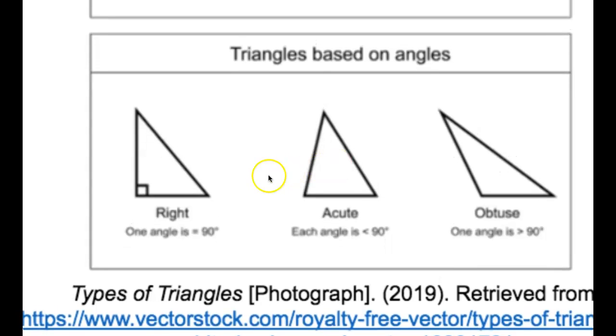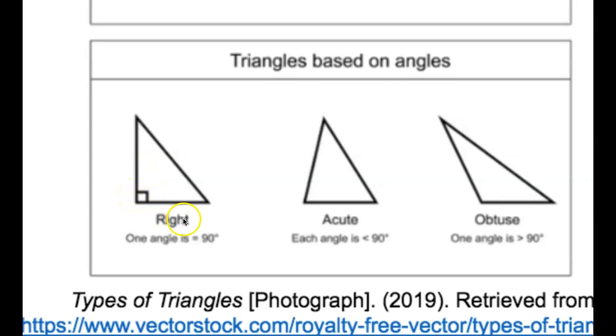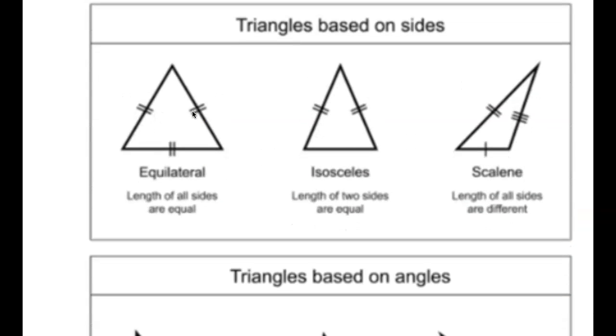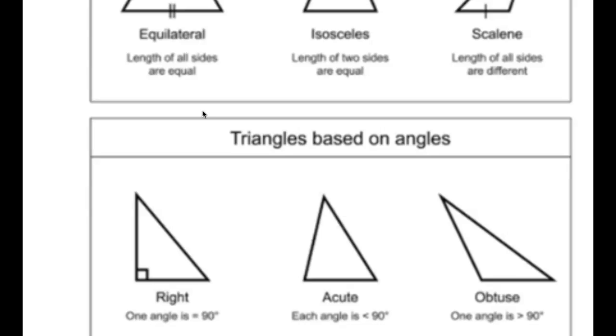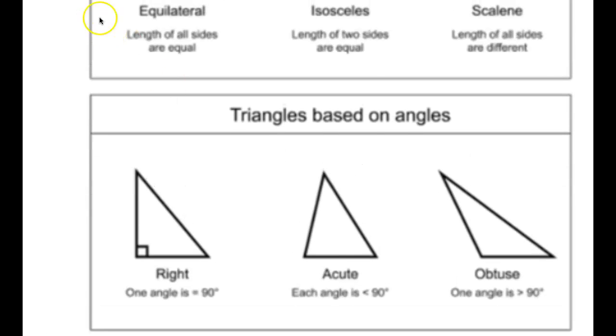Triangles based on angles. If there's one right angle, and there can only be one right angle if there is, that is called a right triangle. And then if we have all three angles are less than 90 degrees, that's called an acute triangle. And if we have one of the angles that are greater than 90 degrees, and that can only be the case that one is greater than 90 degrees, that's called obtuse. So every single triangle has two names, one according to its sides and one according to its angles.